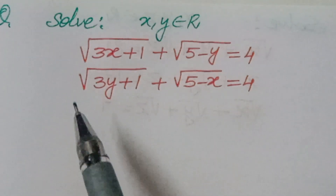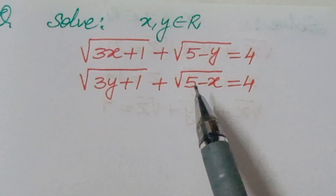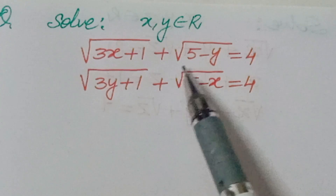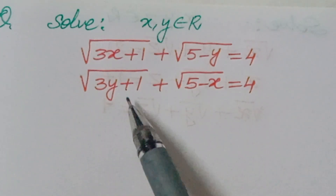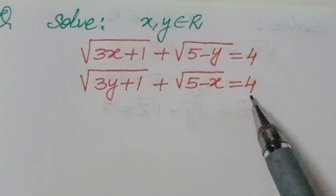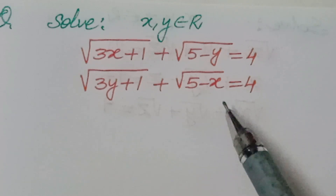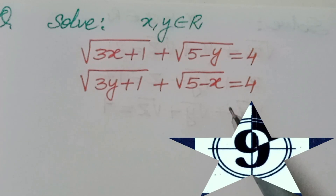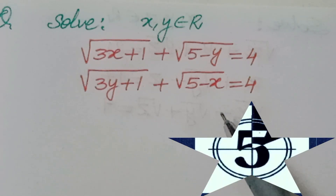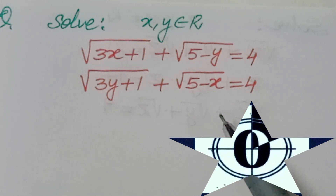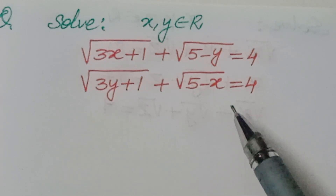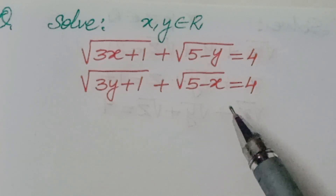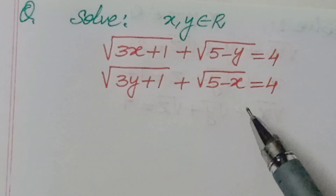Hello, good day everyone. Here is our math challenge for today. Can you solve this math challenge? The question is: solve for (x, y) belonging to ℝ² — square root of (3x + 1) plus square root of (5 - y) equals 4, and square root of (3y + 1) plus square root of (5 - x) equals 4. You can pause this video if you want to try this problem. If you are new to the channel, please subscribe and give it a thumbs up. Now let's answer this question together.